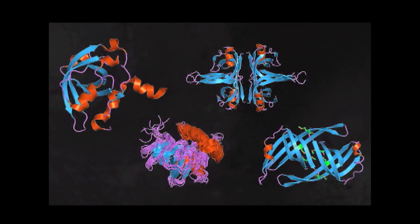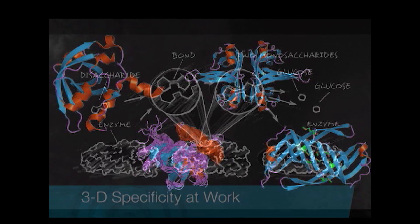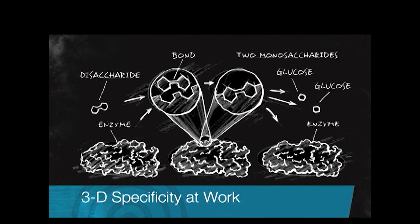But the shape is critical — it allows the protein to do its job. On the next slide, we have a protein involved in an enzymatic reaction. It's actually breaking apart a two-part sugar. At the top of the screen, you see a little sugar that looks like a barbell.